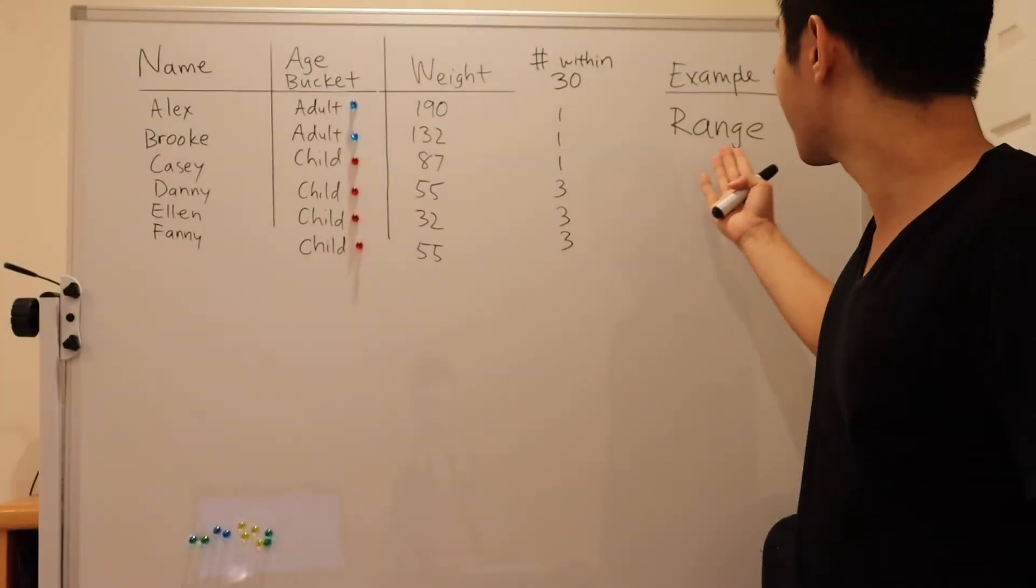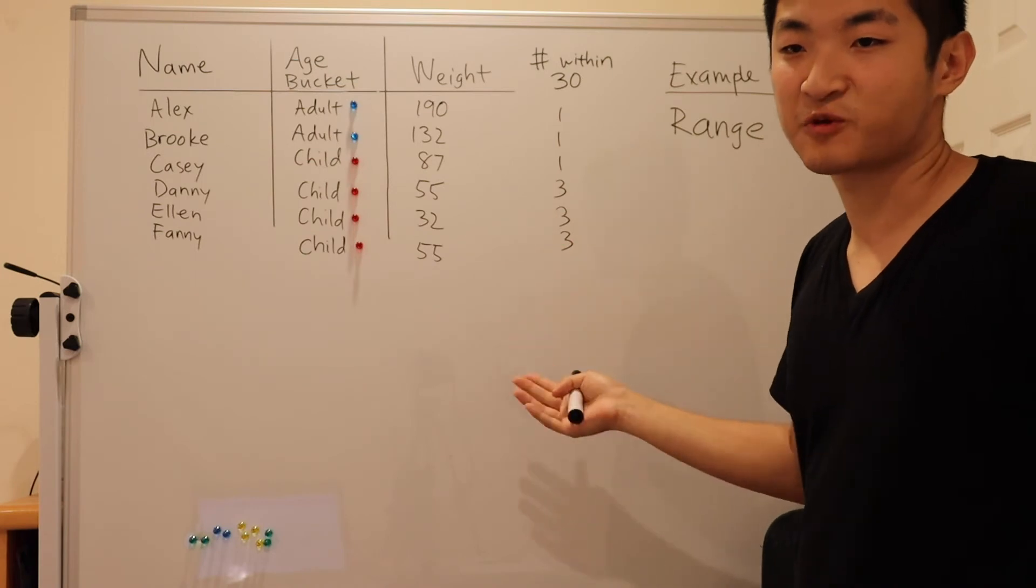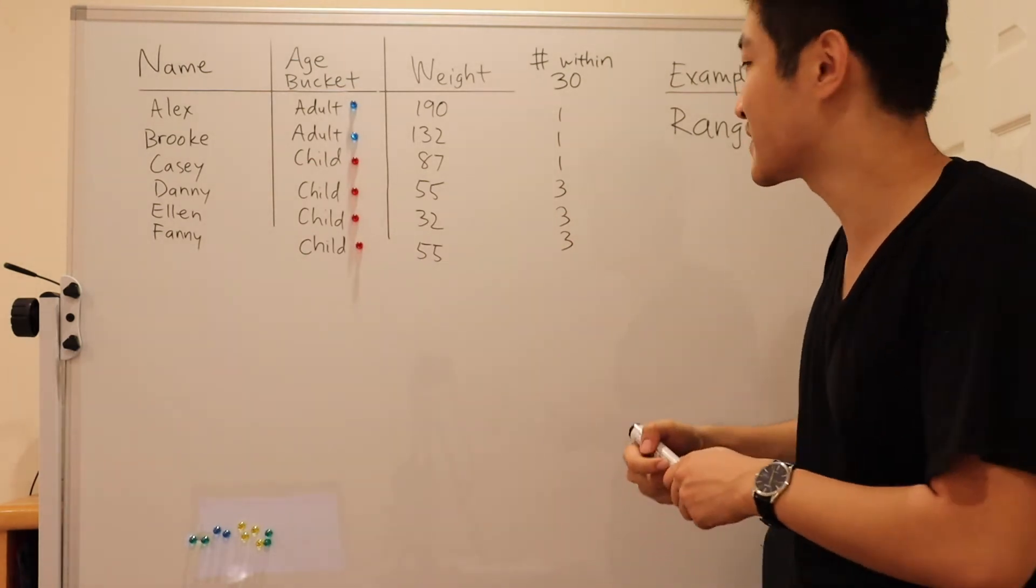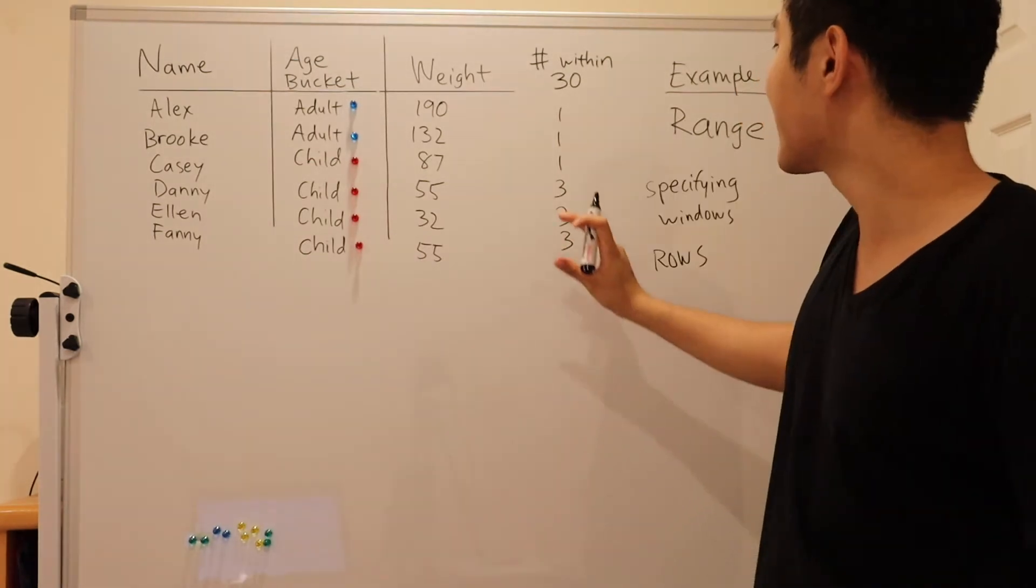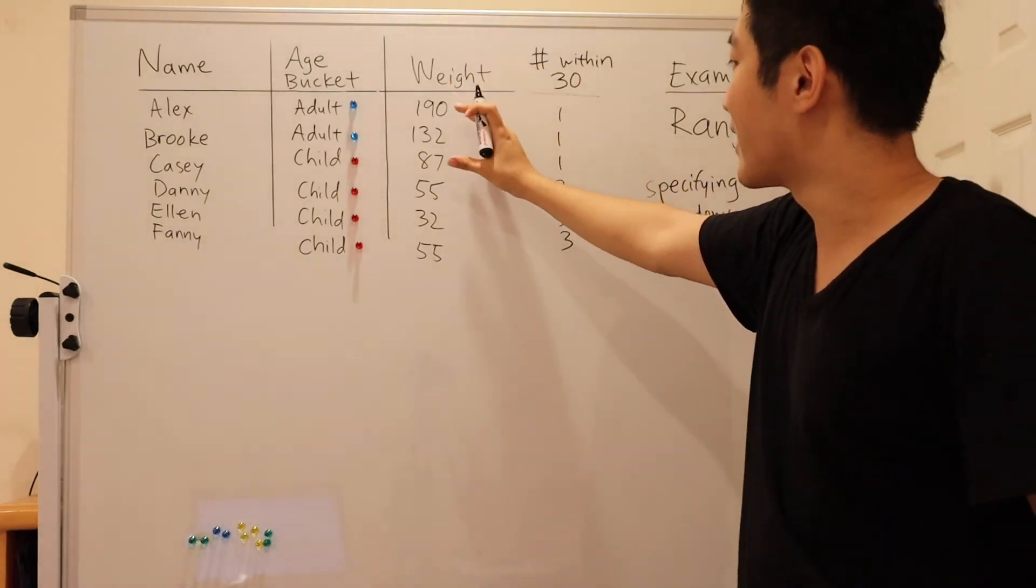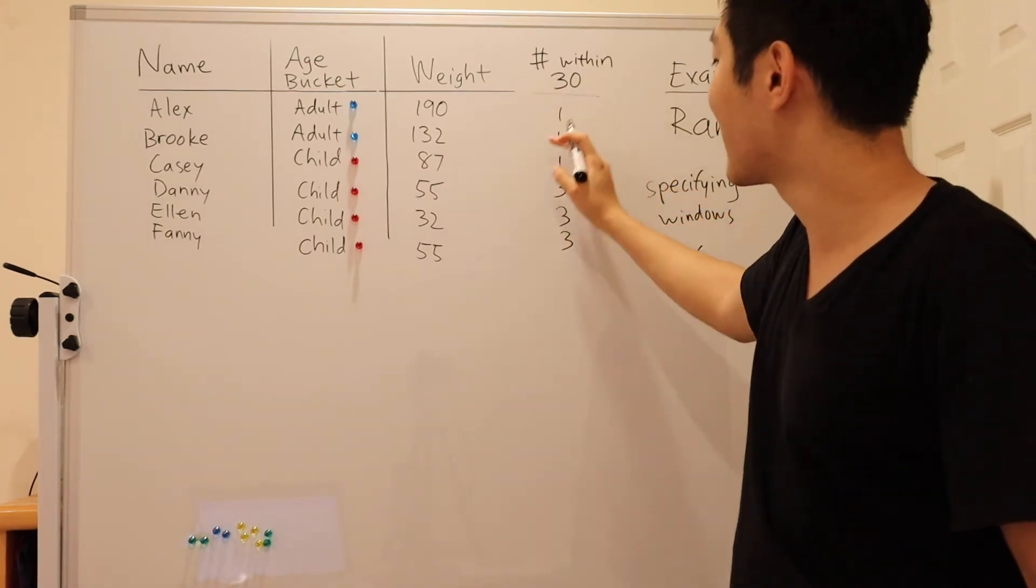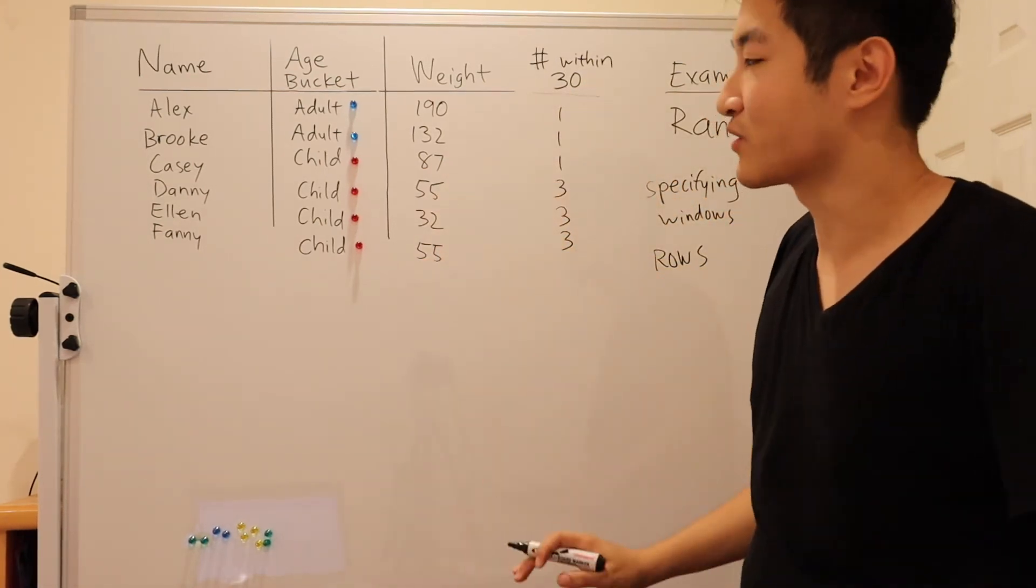All right, for this fourth example, we're going to describe how to use the range keyword instead of the rows keyword to specify your window. So in this case, let's say we wanted to count the number of other people in this data set within 30 pounds of this specific row.